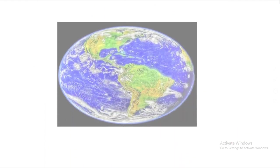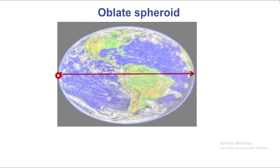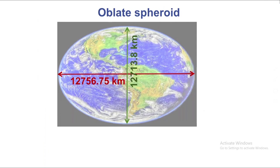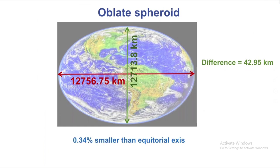The shape of the earth is an oblate spheroid. The length of the equatorial axis is 12,756.75 km. The length of the polar axis is 12,713.8 km. The difference is 42.95 km, and the polar axis is 0.34% smaller than the equatorial axis.